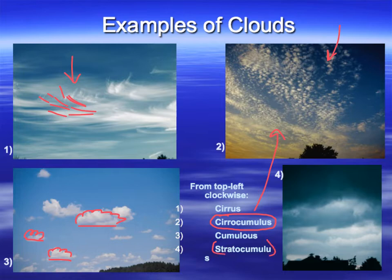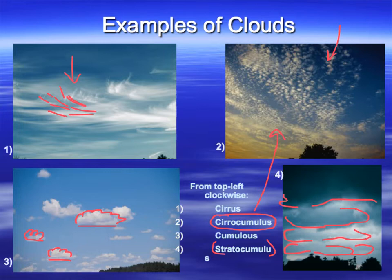Lastly, stratocumulus. Stratocumulus is overcast, but you can almost discern individual clouds — it's like cumulus clouds that have all run together, a combo of layers and individual puffy cumulus clouds. This one looks like it's probably about to bring some rain, so it might turn into a nimbostratus cloud soon.